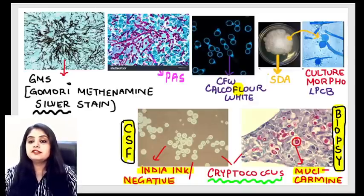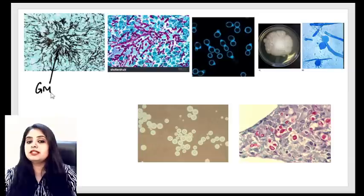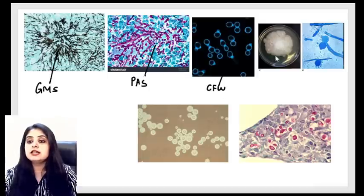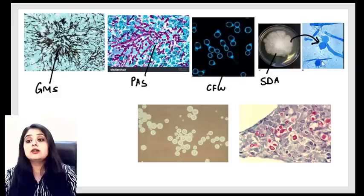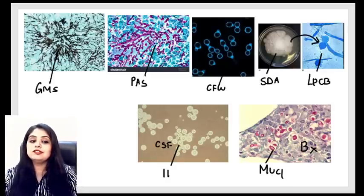Quick recap: black color = Gomori methenamine silver; pink = PAS; fluorescent = calcofluor white; culture media = Sabouraud's dextrose agar; culture morphology = lactophenol cotton blue; CSF for Cryptococcus = India ink; biopsy for Cryptococcus = Mucicarmine. Also remember: the latex agglutination test (LAT) is the famous test for final diagnosis of Cryptococcus.